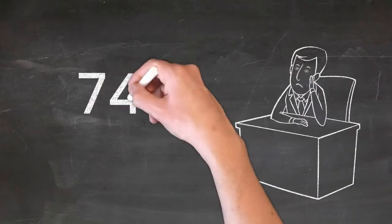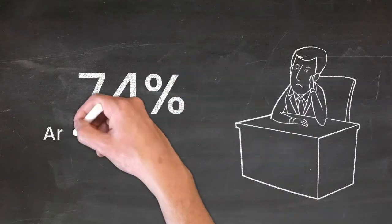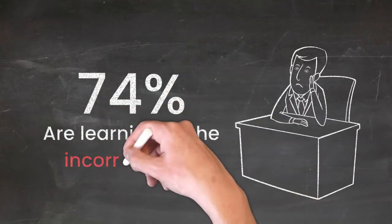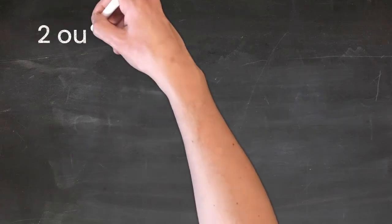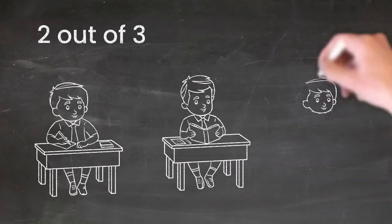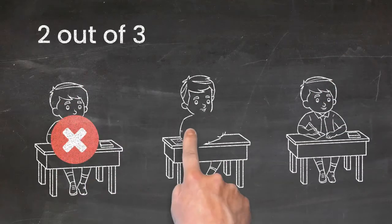We have found that 74% of students who are learning English are learning at the incorrect level. In our experience, 2 out of 3 students do not know their current English level.